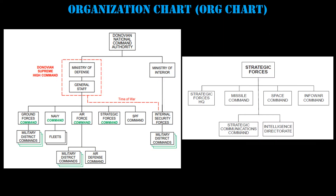Organizational charts are typically used for the highest levels of command. They simply show hierarchy and function. They don't provide information on capabilities, weapon systems, manpower, or really much of anything else.